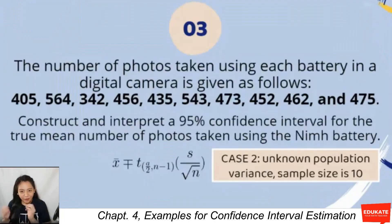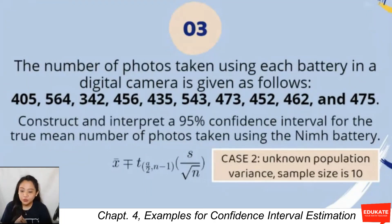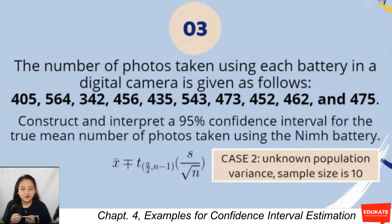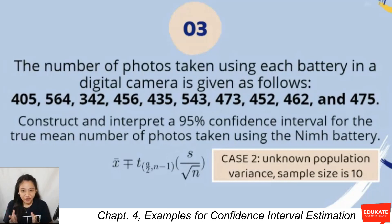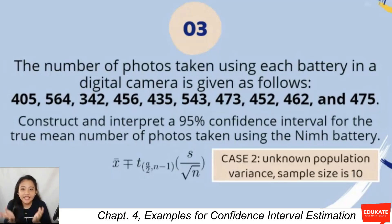Now moving to example three: we are given the number of photos taken using each battery in a digital camera — values such as 405, 564, 342, up to 475. We are asked to construct and interpret a 95% confidence interval for the true mean number of photos taken using the NiMH battery. Since there is no population variance, we look at cases two and three.